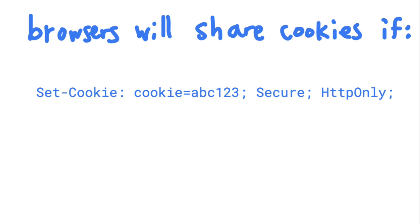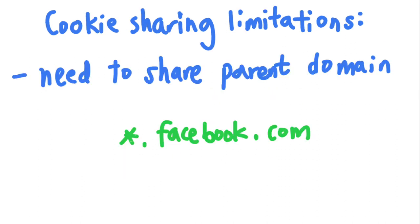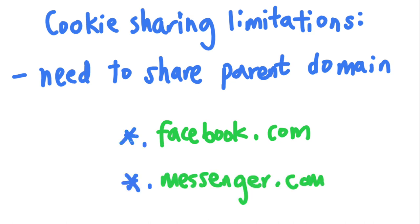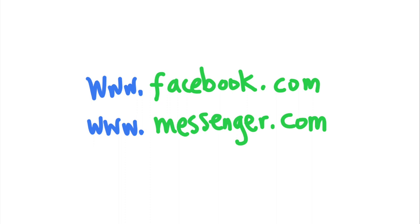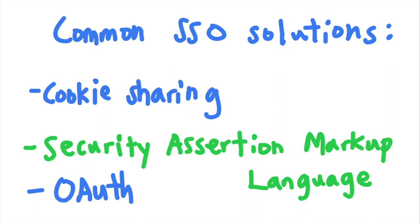By specifying a cookie's domain, the browser would automatically share the cookie with all subdomains of the parent domain. But browser cookies cannot be shared across different domains, so Facebook and Messenger cannot share cookies because they don't share a common parent domain. And this is where SAML comes into play. SAML, or the Security Assertion Markup Language, can be used to implement SSO when the services don't share a parent domain.